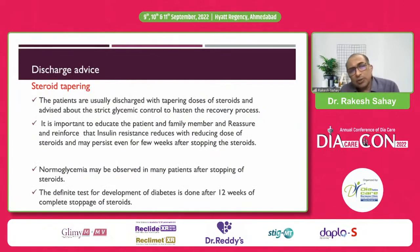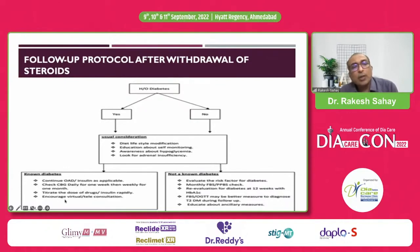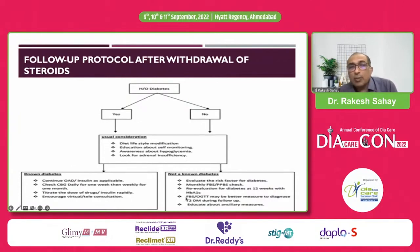Normal glycemia can be observed in many patients after stopping steroids, but we should follow them up and retest after 12 weeks to confirm the patient has returned to normal, since some may continue to have hyperglycemia. For known diabetics, titrate drug or insulin doses rapidly as steroids are reduced and stopped — ensure they are educated and monitoring frequently. For those who were not previously diabetic and normalize after stopping steroids, still test after 12 weeks, and subsequently every six months to ensure normal glycemia is maintained.